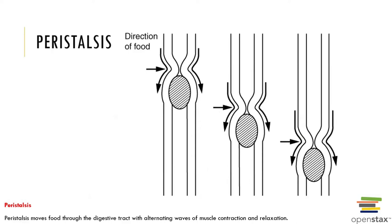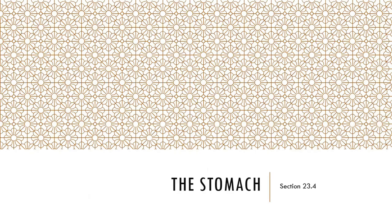We can see the direction of food due to neurological and endocrine control, as well as gravity helping the food move in the correct direction. There is an alternating wave of smooth muscle contraction and smooth muscle relaxation.